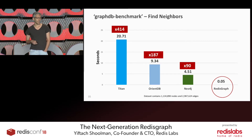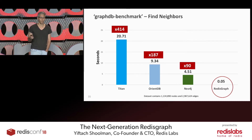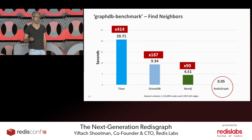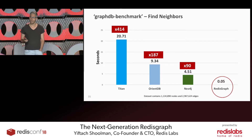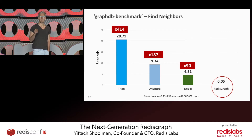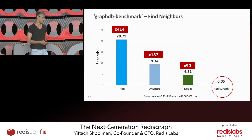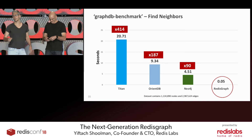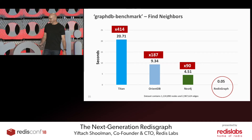The second benchmark deals with graph querying — specifically finding all neighbor nodes for every single node in the graph we just imported. We were able to do that in 50 milliseconds, which is at least 90 times faster than any graph database that we tested against.